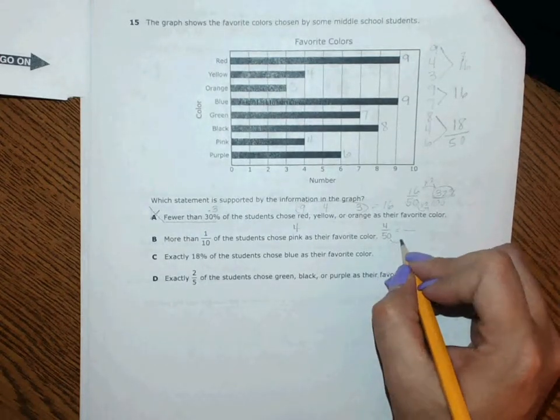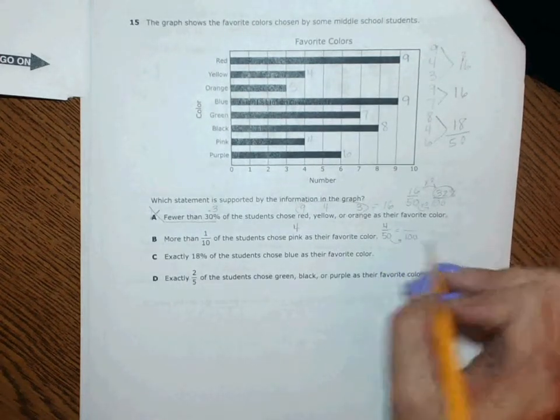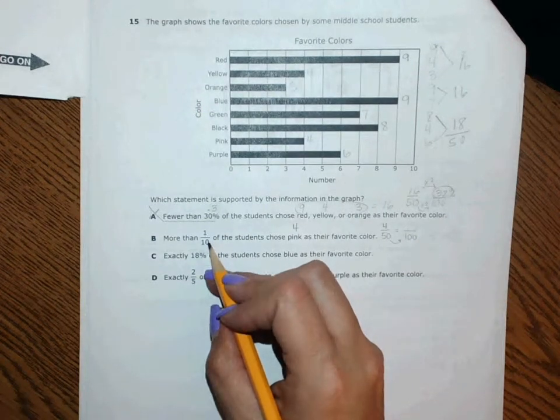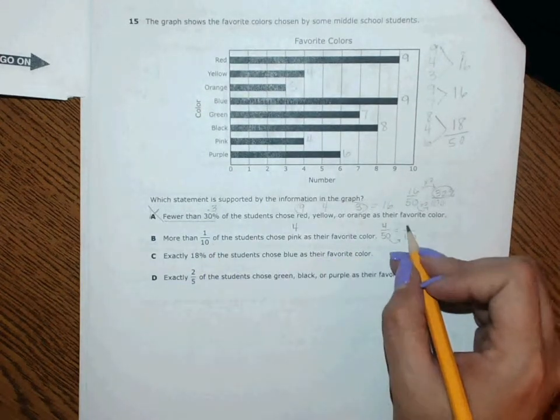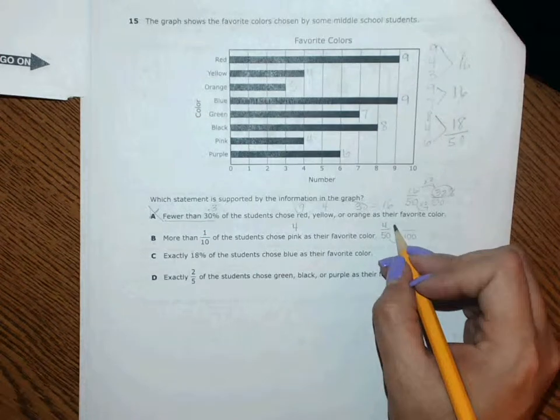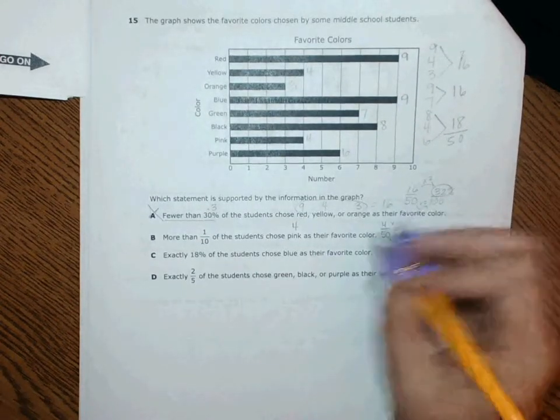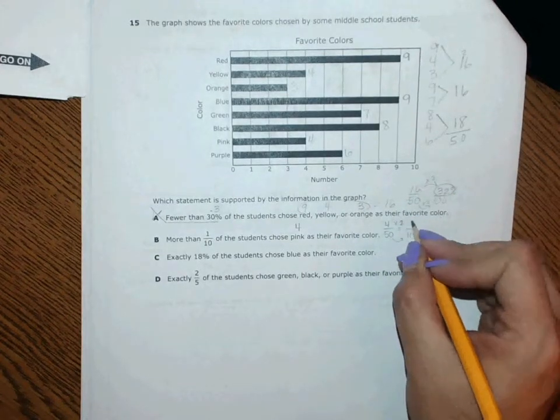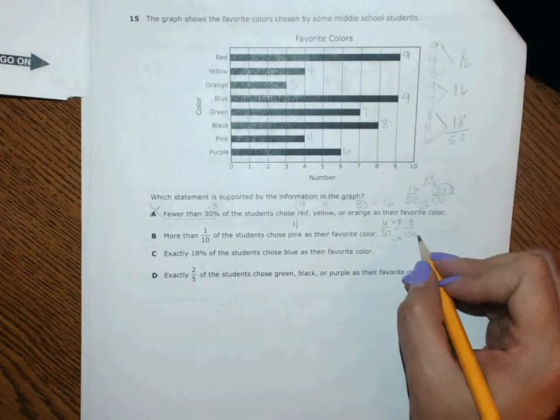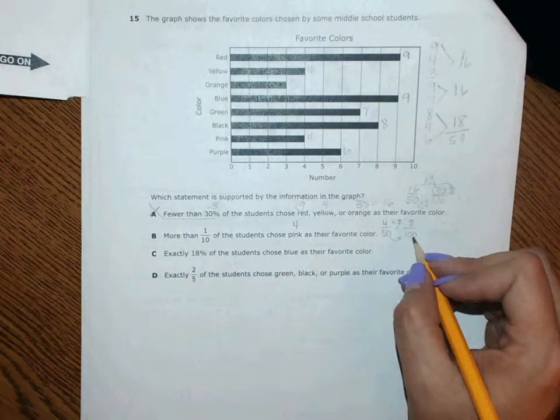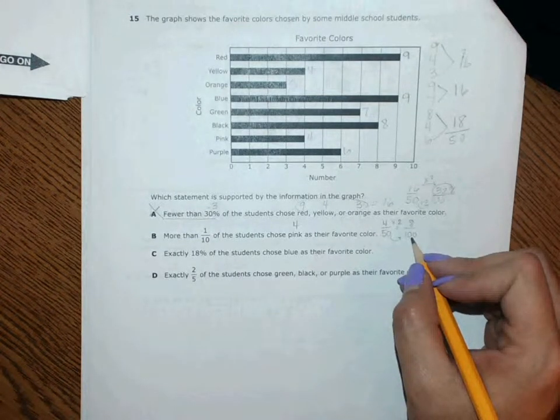Again I'm thinking percents just because I know that I can easily change a fraction out of a hundred into a tenth. So I'm going to double this, times 2 makes 8. And then if I'm going to turn this into a tenth, I'm going to divide by 10.